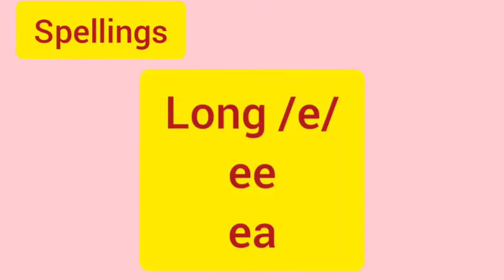Let's start from spelling. The long 'ee' sound can be written as double-E or E-A. The long 'ee' sound — we can write it as double-E, or else we can write E-A. We are going to learn some long 'ee' sound words and see whether we write double-E or E-A.